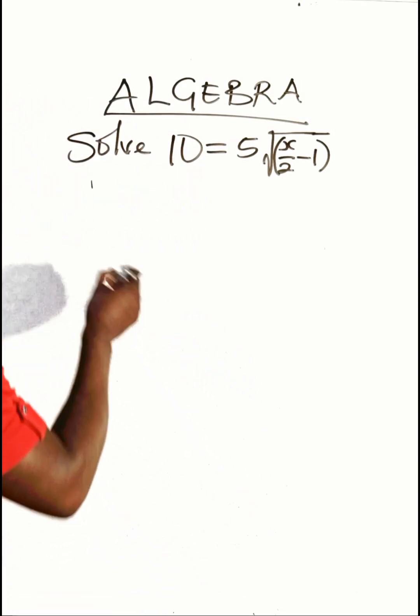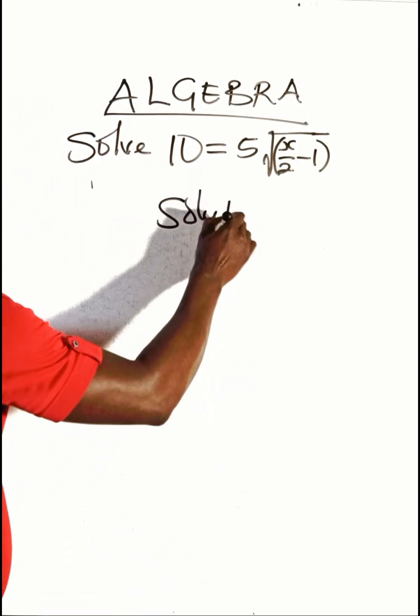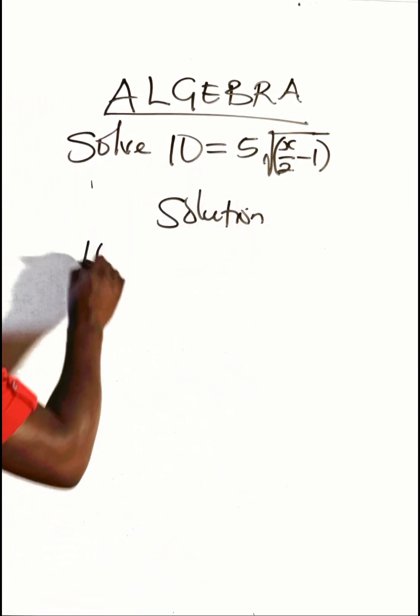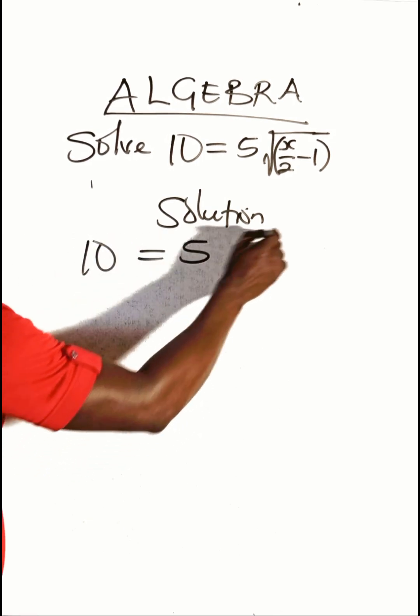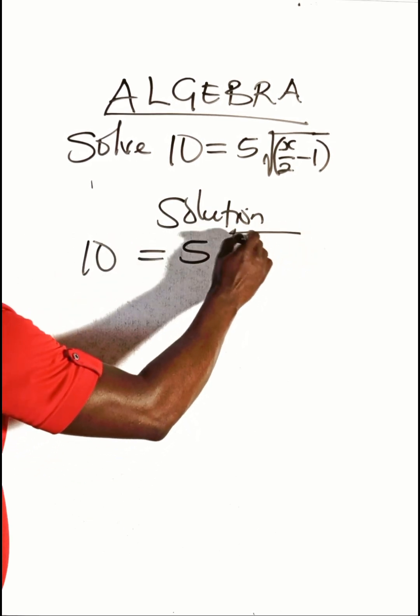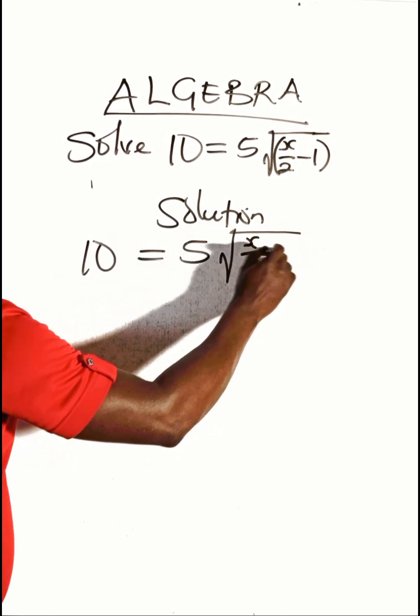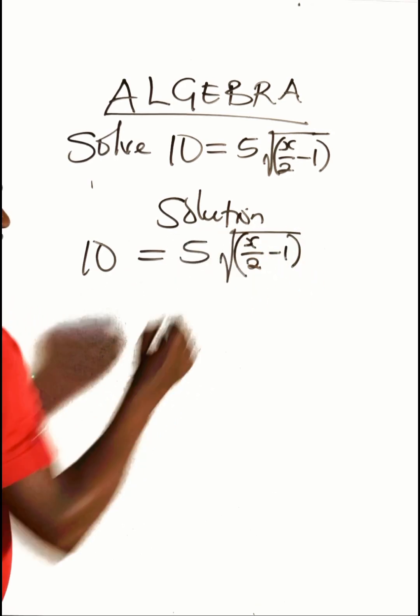Okay, let's quickly go. 10 is equal to 5 times the square root of x over 2 minus 1. Right?